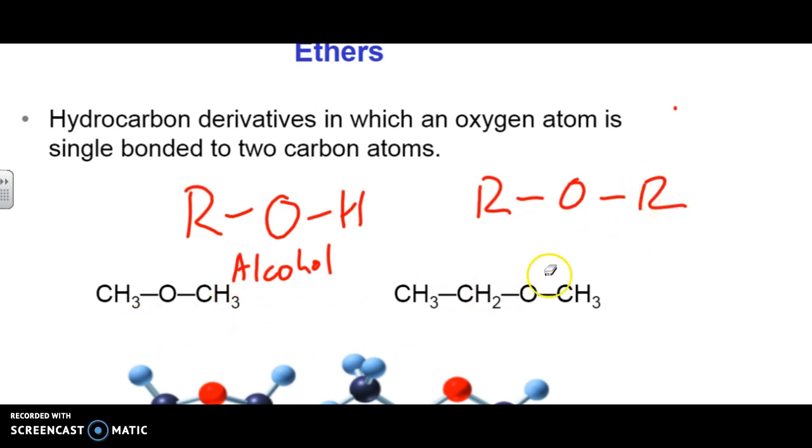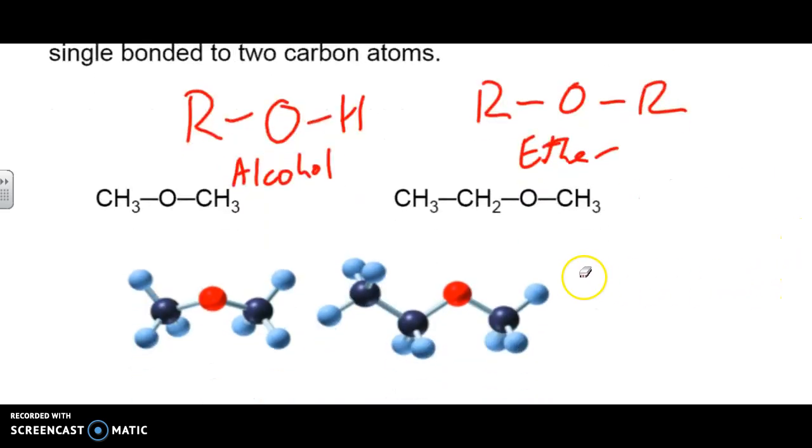So here we've got two examples of ether chains. So what we need to do when we're naming these is figure out what's going to be the longer chain and then the smaller chain. So in this particular case here, this is going to be an ethane.